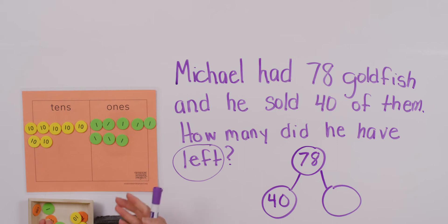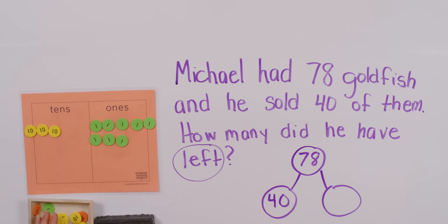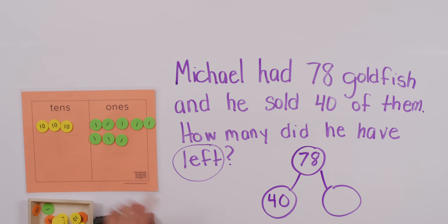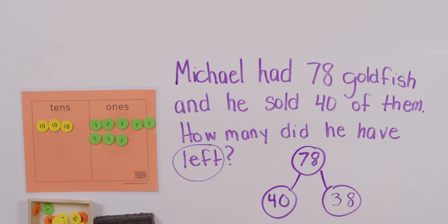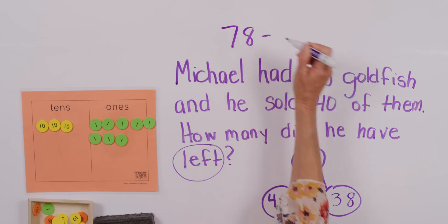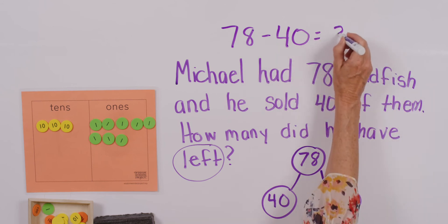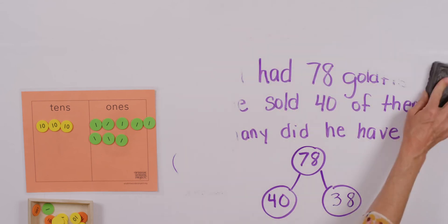If we sell 40 of them — ten, twenty, thirty, forty — we remove them and see what we have left. Did our ones change at all? No, so the ones are still the same. What we did was take four tens away from the seven tens we originally had, and that leaves us with three tens. Our equation is 78 minus 40 — the whole minus a part — and we're looking for the other part, which is 38.